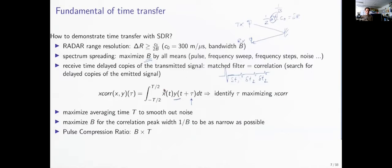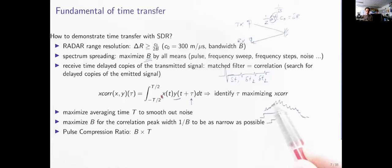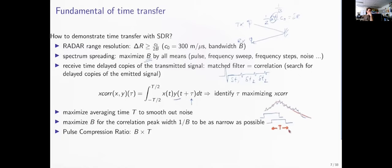We also want to reject noise and recover the transmitted pulse y. The best approach is a sliding average over pulse duration T—the longer the pulse, the better the noise rejection. This creates a duality: maximizing duration T for noise rejection versus maximizing timing resolution 1/B. This trade-off is quantified by the pulse compression ratio, to be defined shortly.